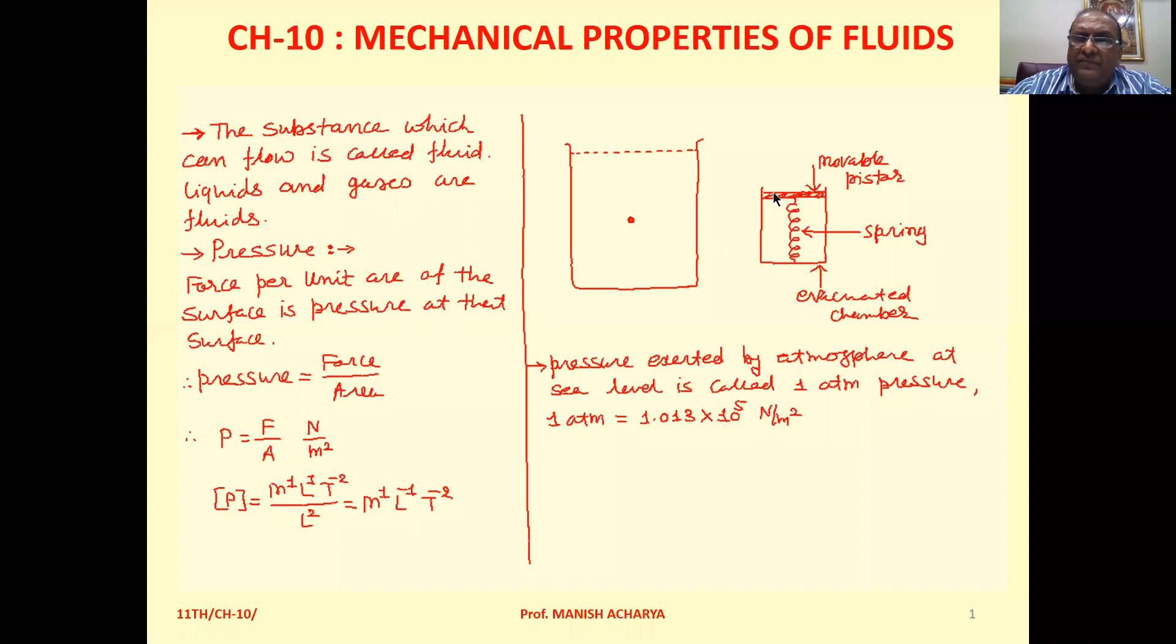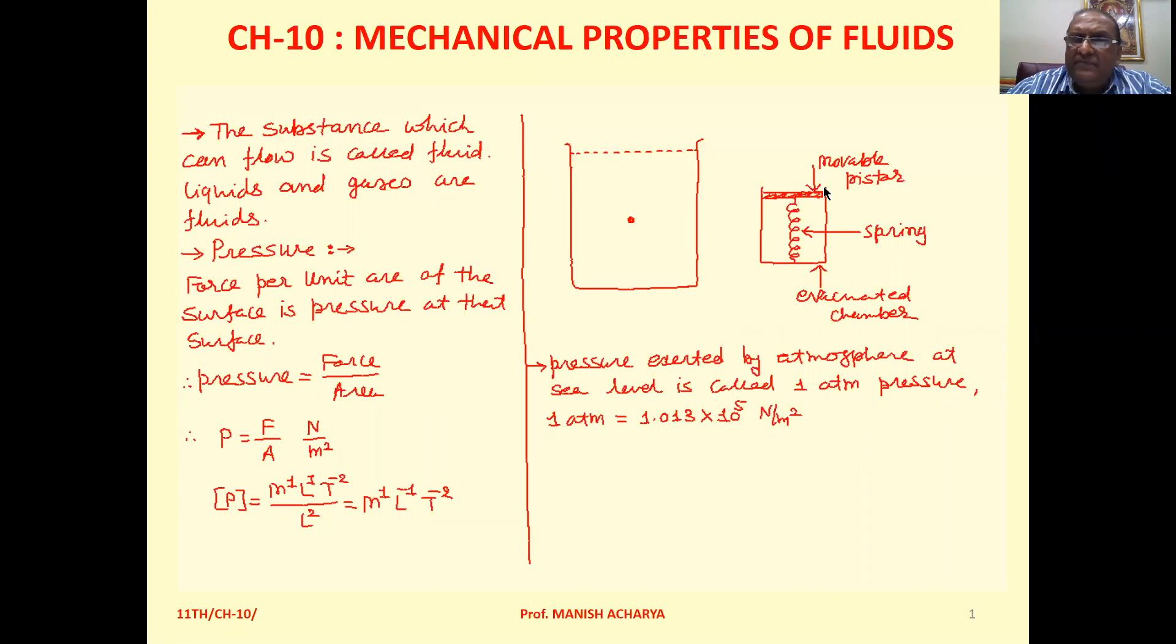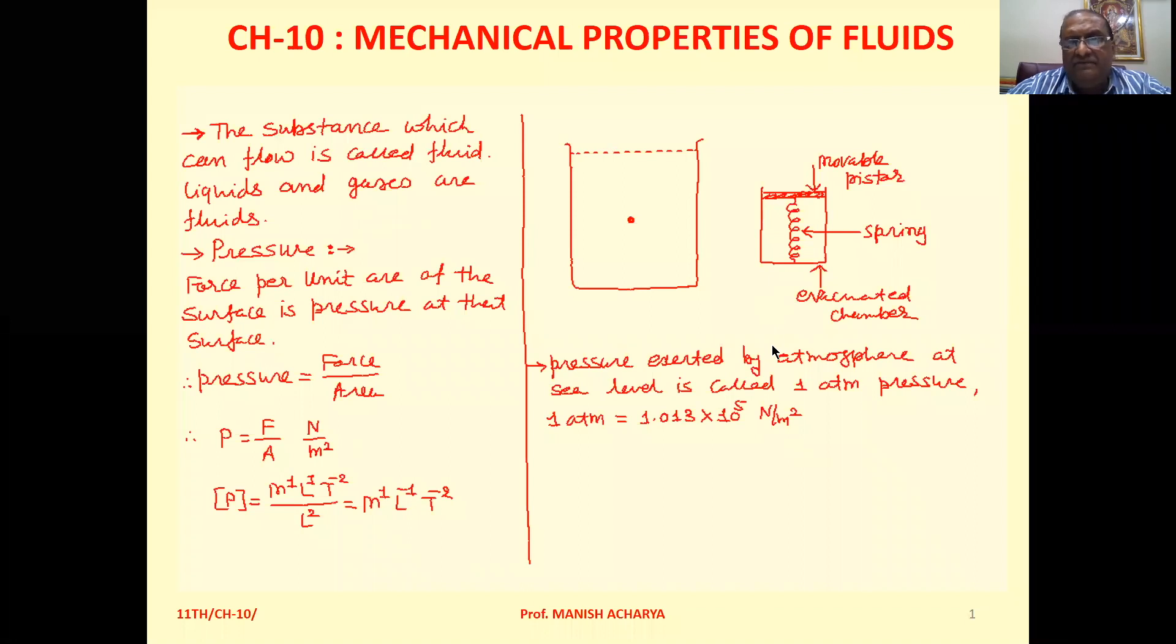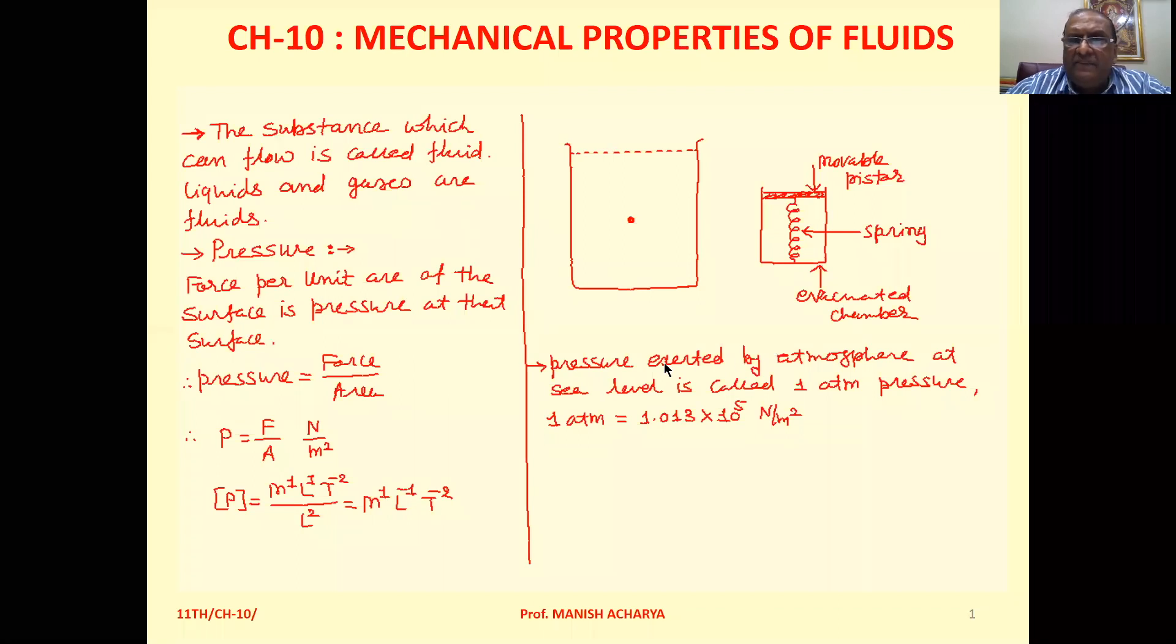Now we have the area of the piston, so by taking the ratio of force to area, one can calculate the pressure.